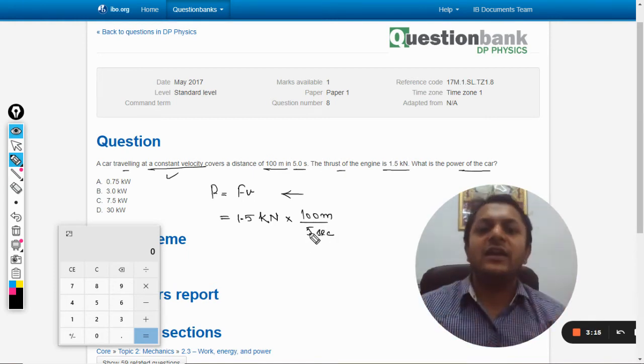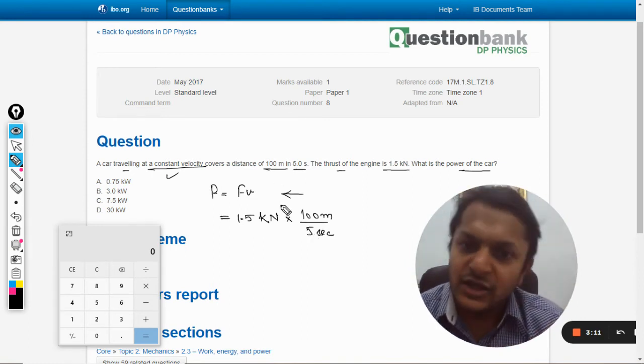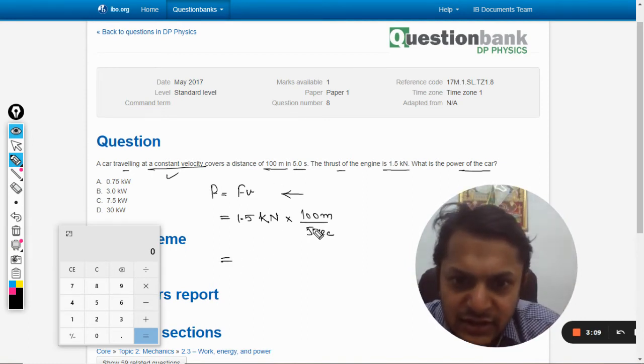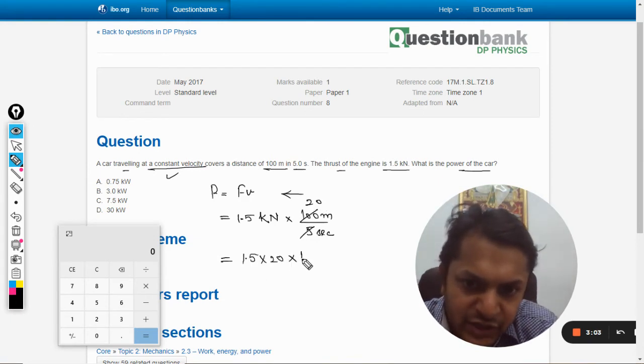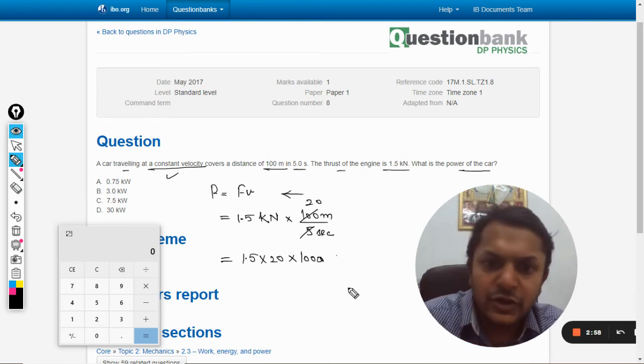All the units are in SI, that is newton, meter, and second, so we can just simplify. This should be 20. So it will be 1.5 into 20 into 1000.